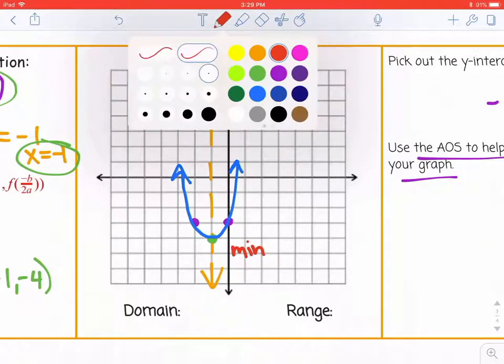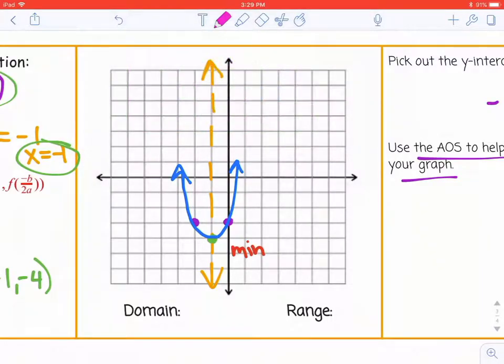I just need to write domain and range. The domain, for all the parabolas we're going to do in Math 2, is all real numbers because your graph goes to the left and to the right forever.